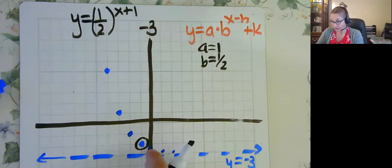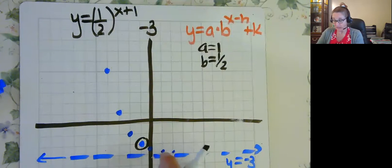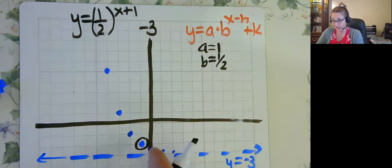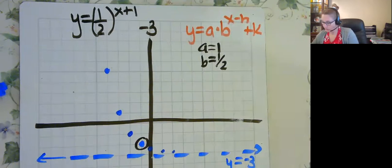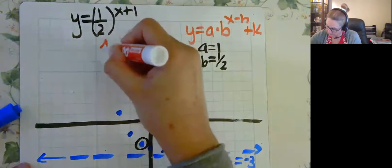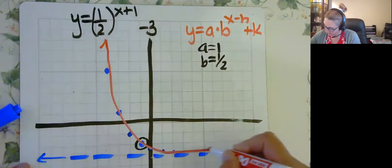Then it's half as high, and half as high, and half as high. And if I'm going backwards, I'm doing the opposite. So if I'm making it half going forward, I'm doubling going backwards. And that is your graph.